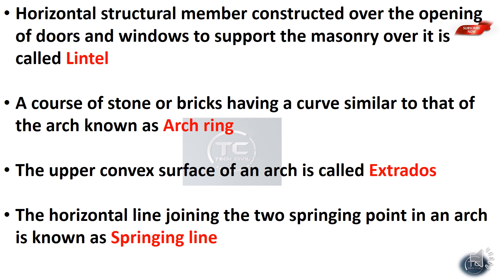The outer curve of the arch is called extrados. The outer curve is also called the external curve of the arch. The horizontal line joining the two springing points in an arch is known as the springing line.